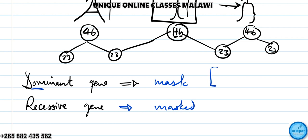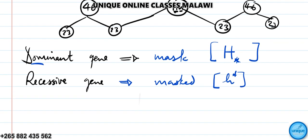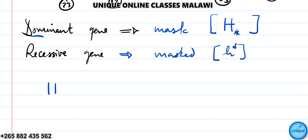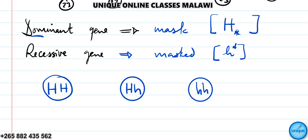In biology, dominant genes are represented by capital letters and recessive genes by small letters. So we can have three combinations: capital H and capital H (HH), capital H and small h (Hh), or small h and small h (hh).